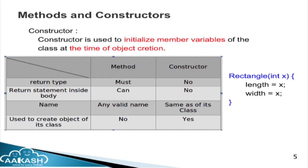Here I have a Rectangle class constructor. The difference between methods and a constructor is that the constructor does not have a return type and no access modifier. In the comparison table: a method must have a return type, but a constructor does not. A method can have a return statement depending on its return type, but a constructor does not need one. A method can have any valid name, but a constructor name must be the same as its class. Finally, a method is not used to create an object of its class, but a constructor helps us create the object.